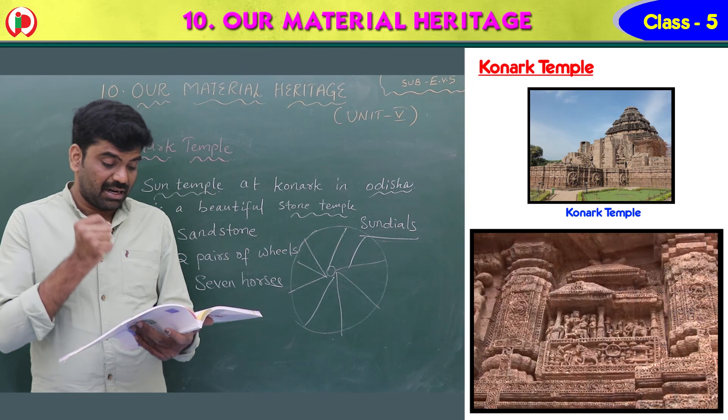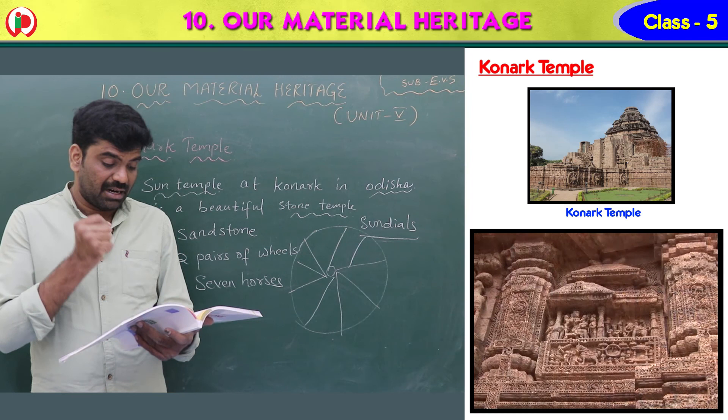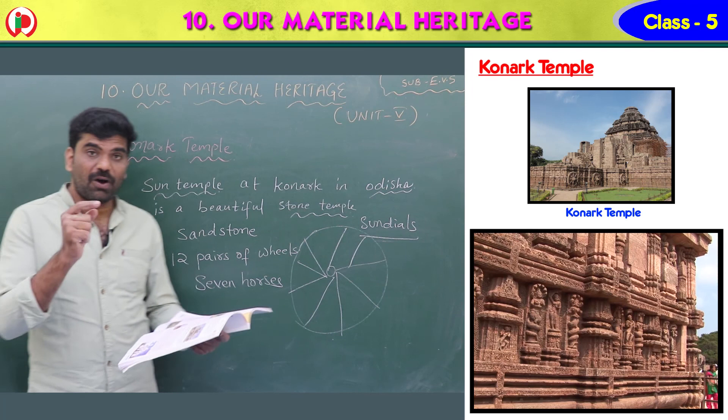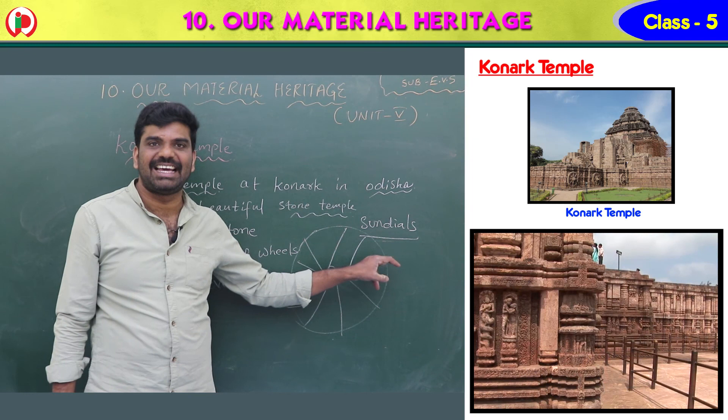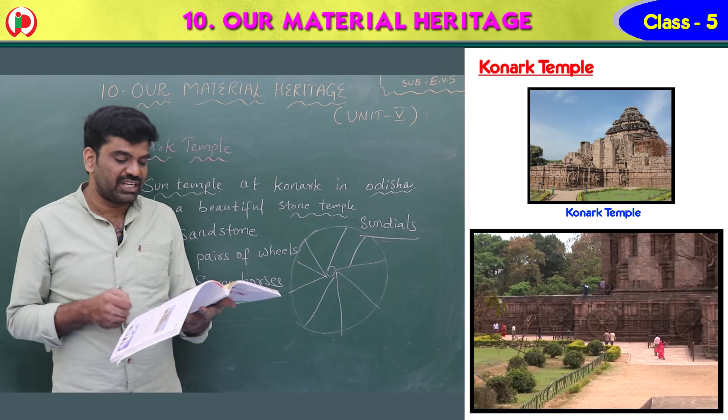The sun temple at Konark is made up of sandstone with 12 pairs of wheels and 7 horses. The wheels are carved like sundials and tell the time of the day. Two giant lions guard the entrance gate.